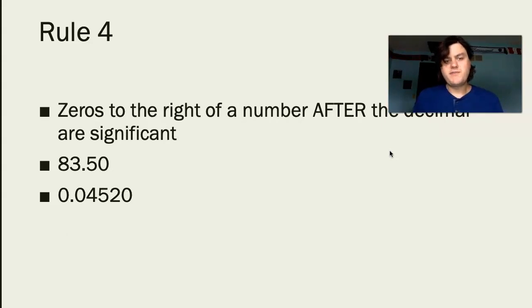Rule number 4 states zeros to the right of a number after the decimal place are significant. Now we're dealing with the end of a number. And if there is a zero at the end of a number and it's after the decimal place, those zeros are significant. If we look at 83.50, this could be a mass measurement that we take in class.